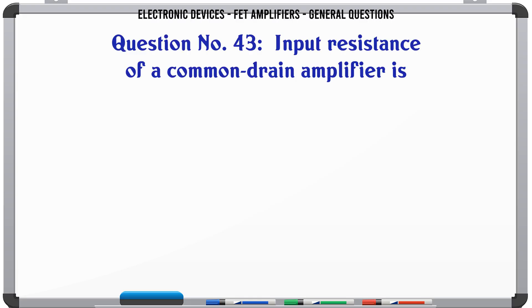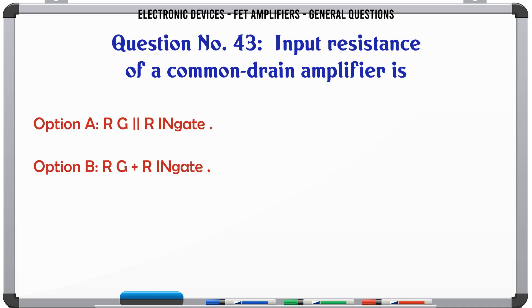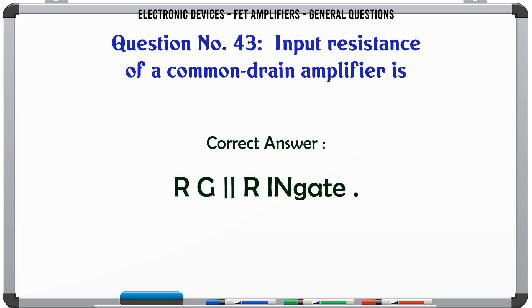The input resistance of a common drain amplifier is: A. RG || Rin(gate). B. RG + Rin(gate). C. RG. D. Rin(gate). The correct answer is RG || Rin(gate).